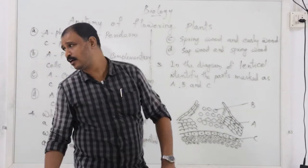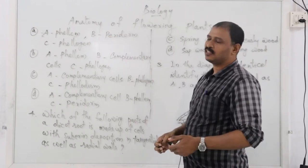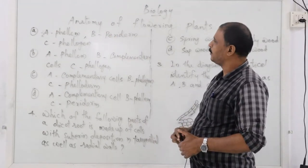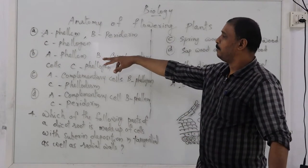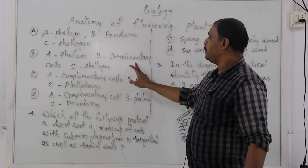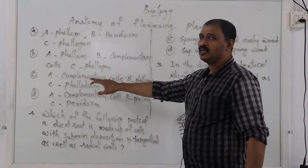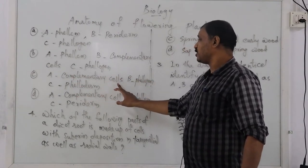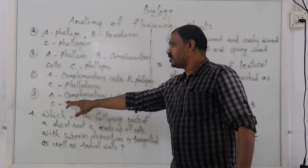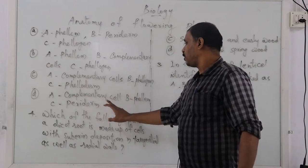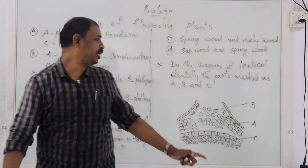In the case of the lenticel, which layer is called the complementary layer? Options: A — Phellum, B — Periderm, C — Phellogen; option B — A: Phellum, B: Complementary cells, C: Phellogen; option C — A: Complementary, B: Phellogen, C: Phelloderm; option D — A: Complementary cells, B: Phellum, C: Periderm.